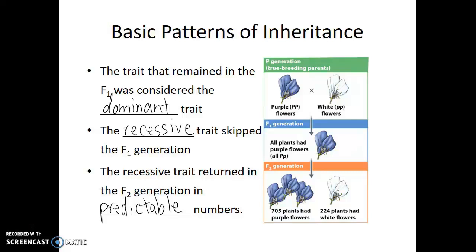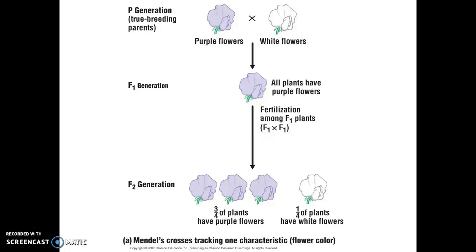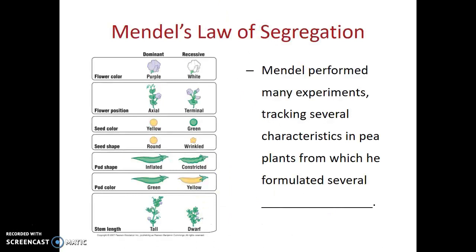Looking at this cross — purple versus white — both are true breeding in the parental generation. Their offspring, all of them, have purple flowers in the F1 generation. But when the F1 generation self-fertilizes and we look at the F2 generation, we get a consistent ratio of about three-quarters showing the dominant trait and one-quarter showing the recessive trait. Gregor Mendel wasn't sure if this was just a quirk of flower color, so he looked at seven different traits: flower color, flower position, seed color, seed shape, pod shape, pod color, and stem length. For all seven traits, one characteristic was dominant to the other, the F1 always showed the dominant trait, and the recessive trait showed up in about one quarter of the F2 generation.